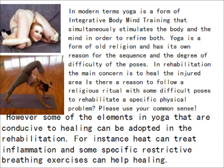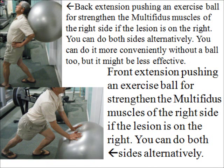Yoga, in modern science, is called integrated body-mind training — it is a form of ancient tradition. But if you just want to treat your back, do you really need to go through a whole series of difficult poses? Please use your common sense. Other variations of the McKenzie exercise include doing it standing up instead of lying face down, or using an exercise ball — extending your back into the ball. You can do it on the affected side first to see how effective it is, then alternately on both sides, or on both sides simultaneously, though that may be less effective.